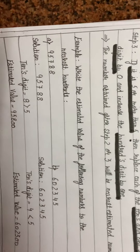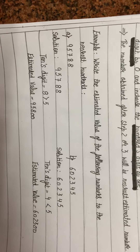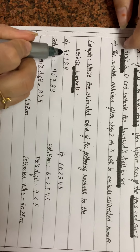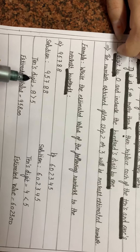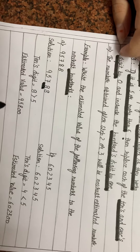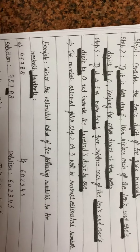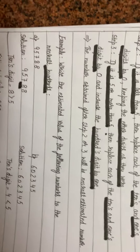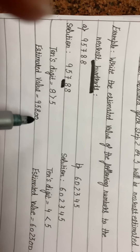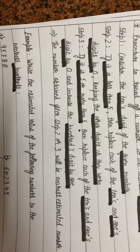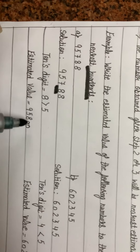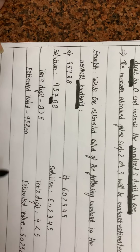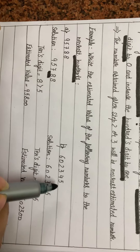Example: Write the estimated value by rounding off to the nearest hundred. Consider 9,578 — the digit at tens place is 7, which is greater than 5. We replace tens and ones digits by 0 and increase the hundreds digit by 1. The hundreds digit is 7, so 7 plus 1 is 8. The estimated value is 9,600.